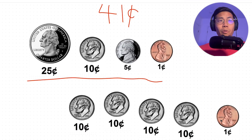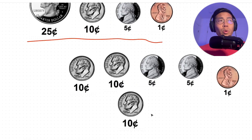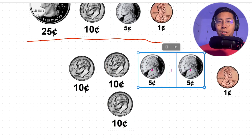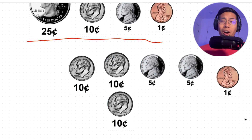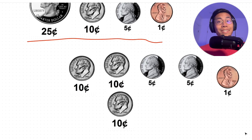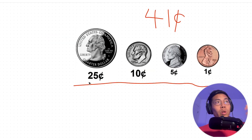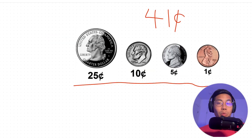For example, we can give the customer four dimes and one penny, or we can give them three dimes, two nickels, and one penny — and we can go on and on. But the purpose of this exercise is to give the least amount of coins possible. So this is where the greedy algorithm comes in: we want to get the biggest coin possible so that we end up with the least amount of coins.